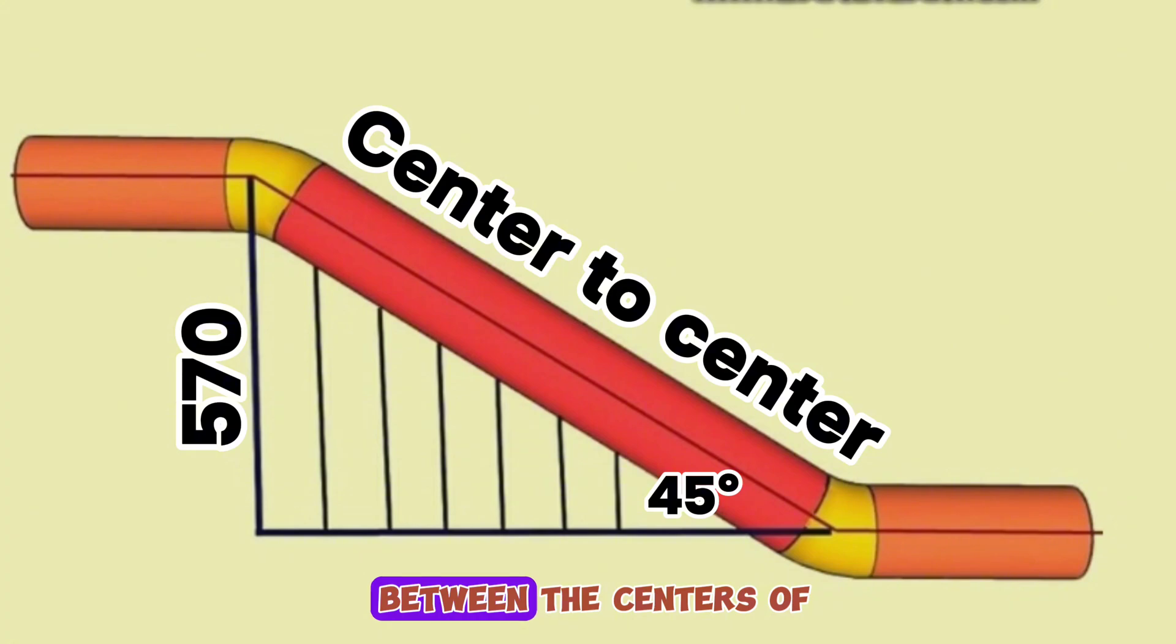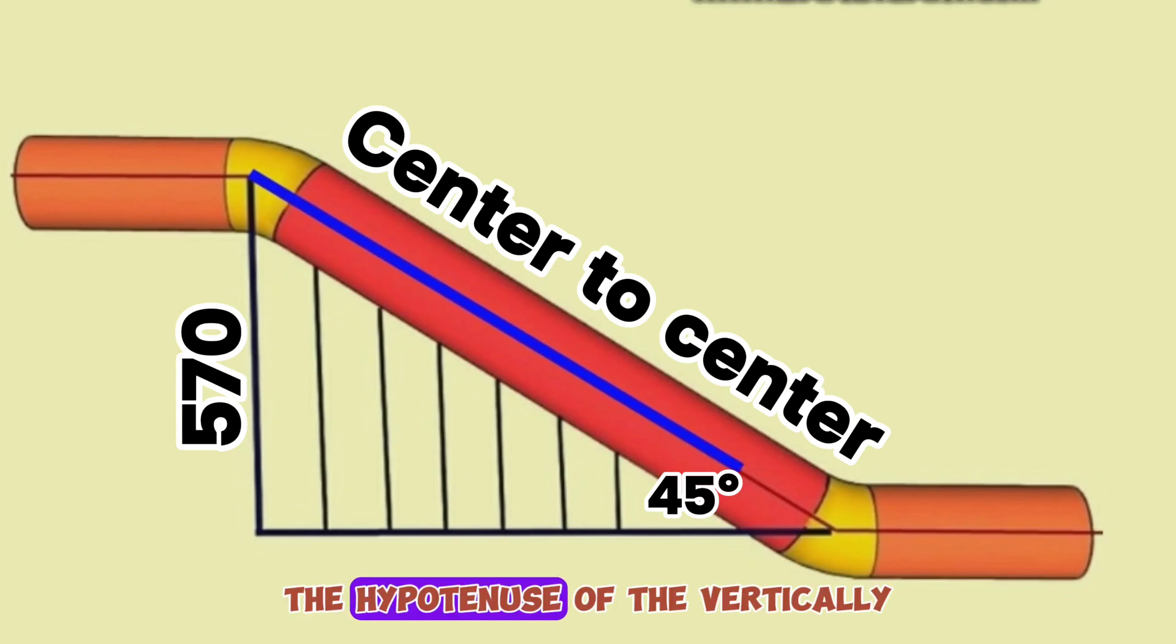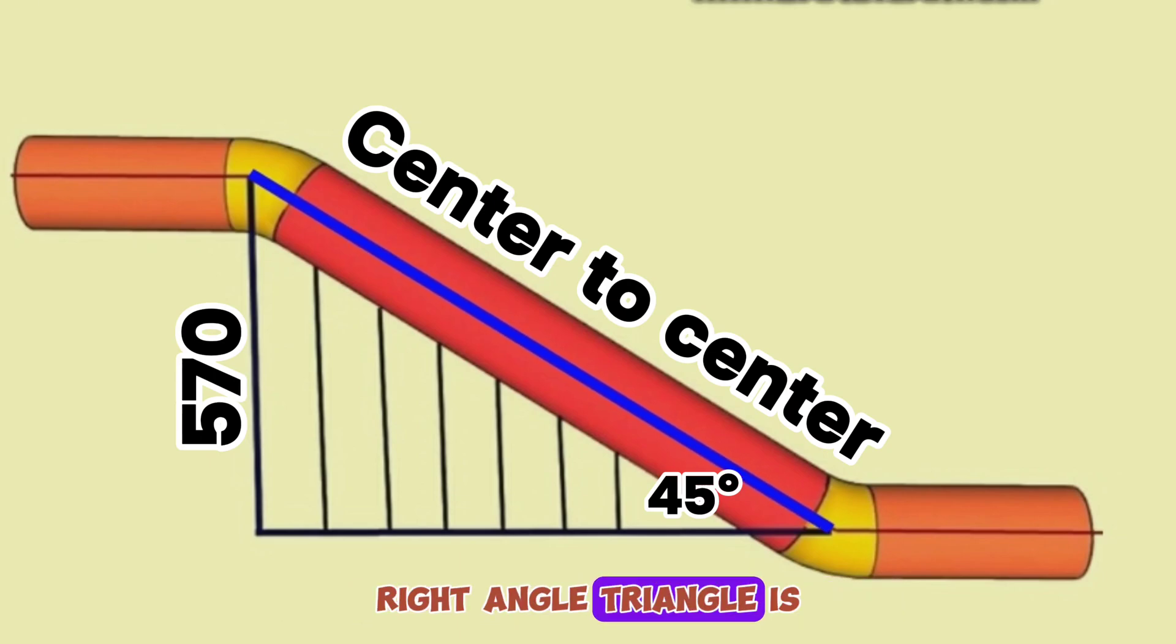To find the distance between the centers of the pipe elbows, we will use this right triangle formed by dashed lines. The hypotenuse of the vertically right-angle triangle is the distance between the elbows in the pipeline.